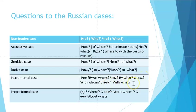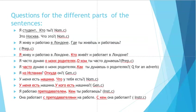For the prepositional case, because it's a location case, 'где' (where) is used. 'О ком' (about whom) is for animate nouns, and 'о чём' (about what) is for inanimate. Let's have a look closely at some sentences.